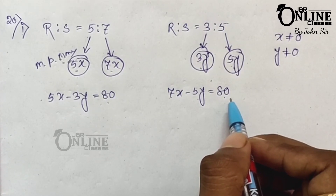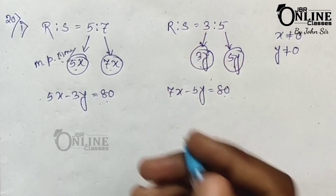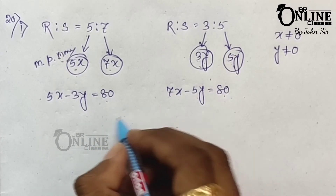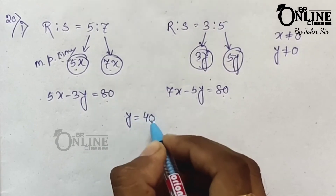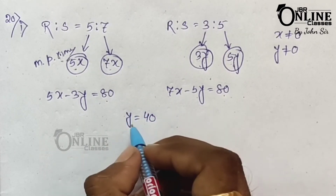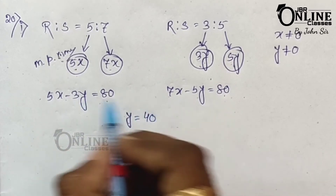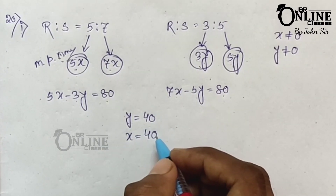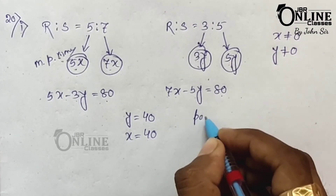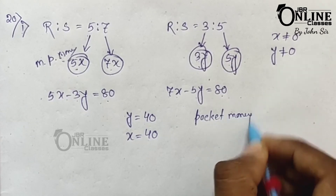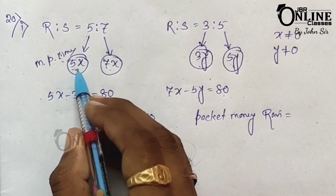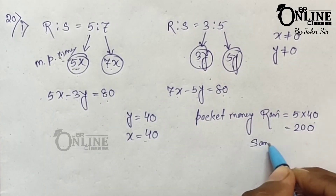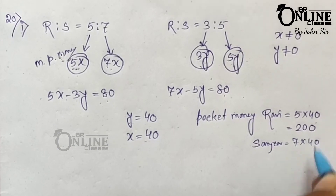Solving these two equations using the elimination method gives y equals 40, and substituting back gives x equals 40. Therefore the pocket money of Ravi equals 5 into 40 equals 200 rupees, and the pocket money of Sanjeev equals 7 into 40 equals 280 rupees.